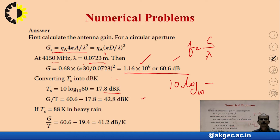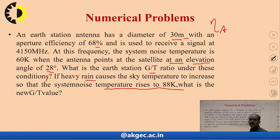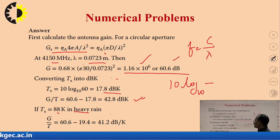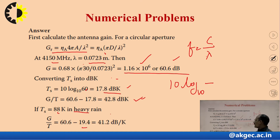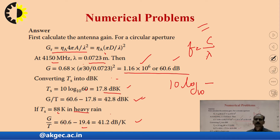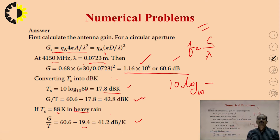For the heavy rain condition, the system temperature rises to 88 K. First convert 88 K to dB·K: 10 log₁₀(88) = 19.4 dB·K. So the new G/T = 60.6 − 19.4 = 41.2 dB·K⁻¹. This is a very important numerical which has appeared in previous university examinations. You should know all these small formulas involving diameter and the related calculations.